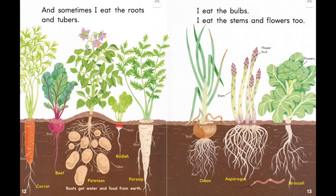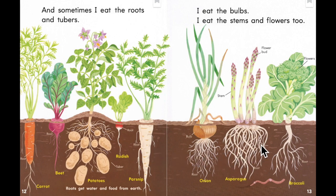The diagram shows what the plants look like above and below ground, then the labels tell you what part of the plant you eat. For example, when I eat asparagus, I eat the flower bud and the stem.